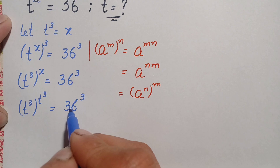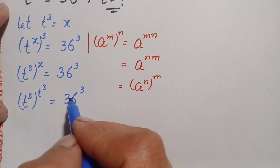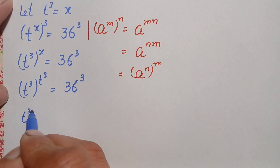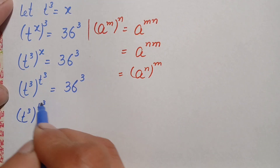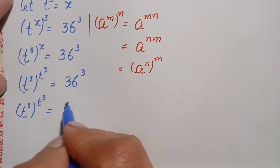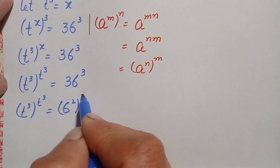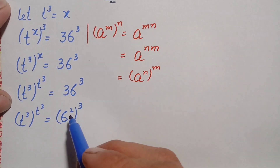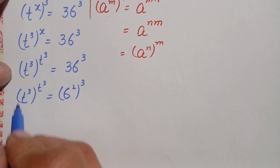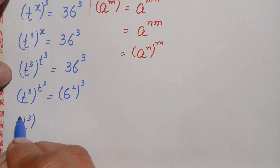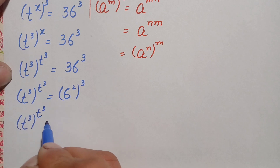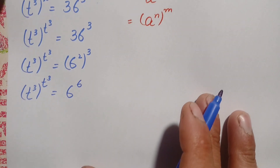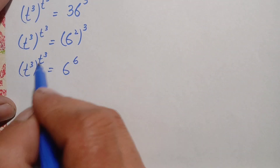We will try to make the right hand side match this form. We change 36 into exponential form: 36 equals 6 squared. So the equation becomes t cubed all raised to power t cubed, equal to 6 squared raised to power 3. Using the exponential identity, we multiply the powers: 2 times 3 equals 6, giving us 6 raised to power 6. Now in both sides, the base and the power are the same.